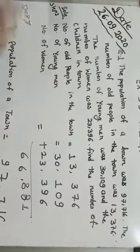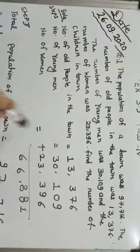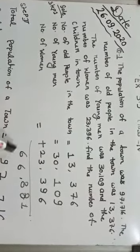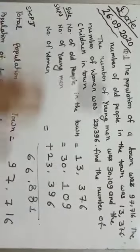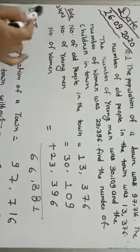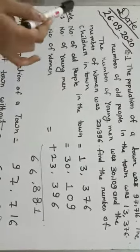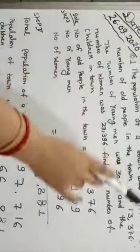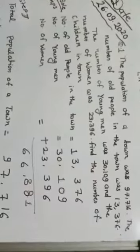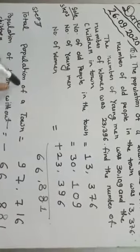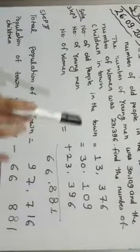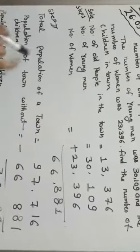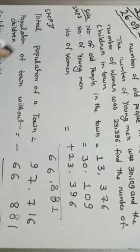The number of young men and the number of women together was 66,831. Now we start Step 2. The population of the town was 97,760. Now we find the population of the town without children.